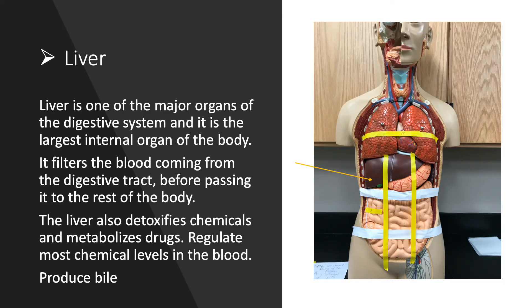Liver is an organ of the digestive system and it is the largest internal organ in the body. It is pointed out with yellow arrow on the torso model and located, the majority of it, on the right upper quadrant, right below the diaphragm. It filters the blood coming from the digestive tract before passing it to the rest of the body. The liver also detoxifies chemicals and metabolizes drugs, regulates most chemical levels in the blood, and produces bile. Human liver has four lobes. The cats and dogs have six lobes in their liver.